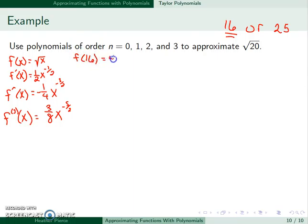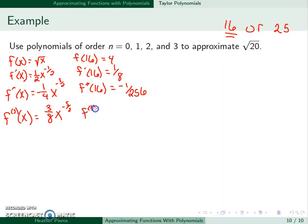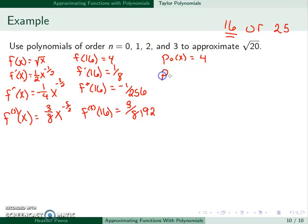Evaluating at 16: f of 16 is 4, f prime of 16 is 1 over 8, f double prime of 16 is minus 1 over 256, and the third derivative at 16 is 3 over 8192. So the zeroth polynomial is just 4 — that's our zeroth approximation. The first polynomial p1 of x is 4 plus 1 over 8 times x minus 16.